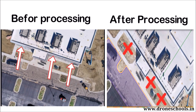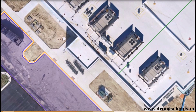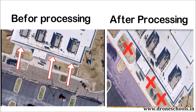Orthomosaic maps offer an accurate representation of the land. Because of this, they can be used to measure true distances using these images. Now you have an idea of what exactly an Orthomosaic is, so let's discuss what the applications and advantages of Orthomosaic maps are.